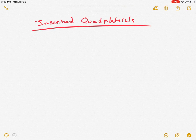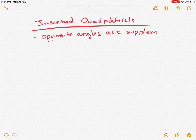We have our inscribed quadrilaterals. Remember, quadrilaterals is a shape that has four sides. If a quadrilateral is inscribed in a circle, then the opposite angles are supplementary. And as we know, supplementary means they add to 180 degrees.